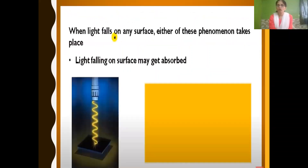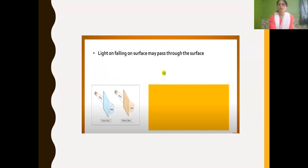When light falls on any surface, any one of the following phenomena takes place. Light falling on a surface may get absorbed — what we call absorption — or light may pass through the surface, like through glass. When light falls on clear glass, all the light can easily pass through it; this is called transmission.